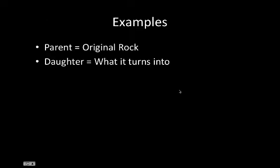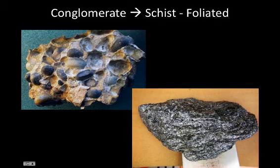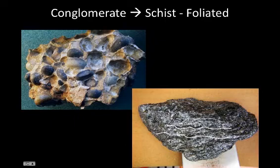Before we look at examples, it's important to get down two more vocab words: parent and daughter. Parent is the original rock; daughter is what it turns into. For example, conglomerate — a rock we've seen before — after being exposed to lots of pressure turns into schist, which is foliated. You can see alternating wavy bands all throughout the rock — that's foliation, forming due to more pressure than heat.